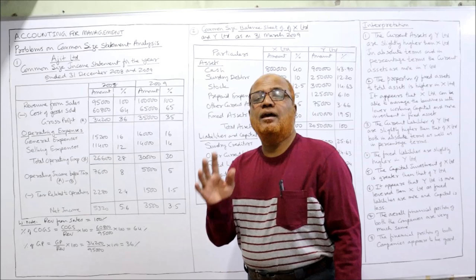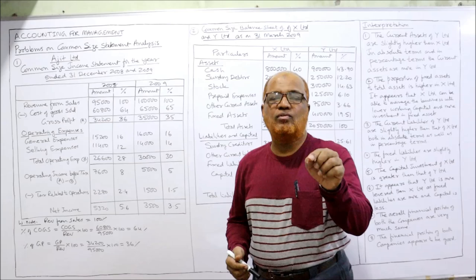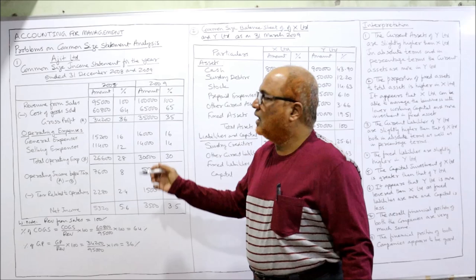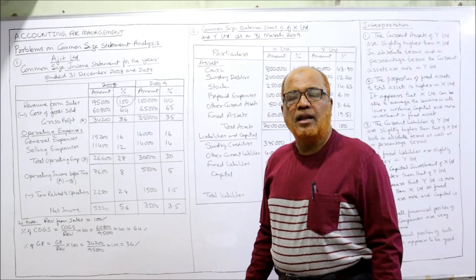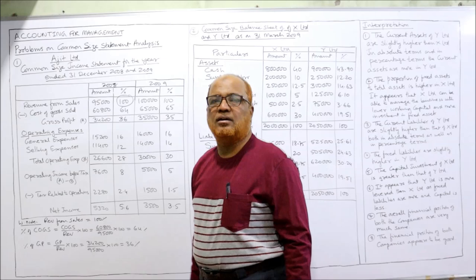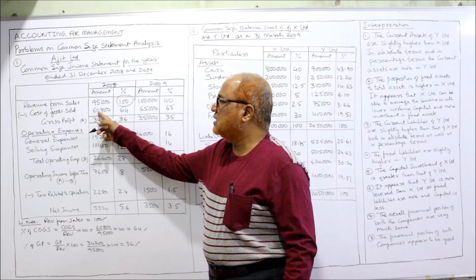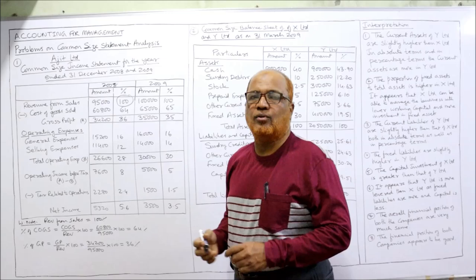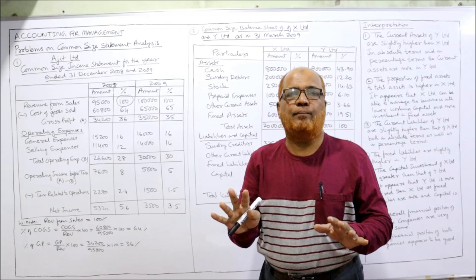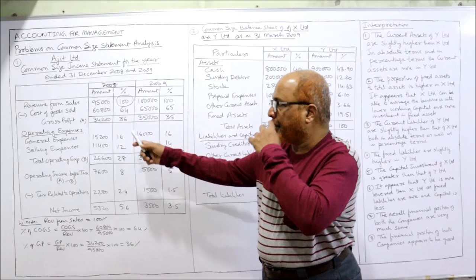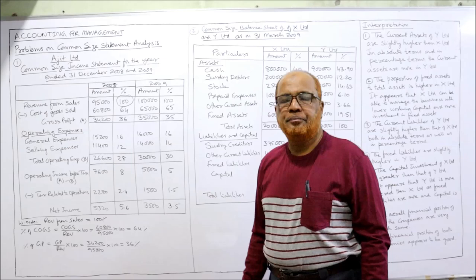Now we calculate the percentages. Remember, in the income statement the base is net sales, which is taken as 100 percent. Revenue from sales is taken as 100 percent. Express all other items as a percentage of sales. For example, cost of goods sold: 60,800 divided by 95,000 into 100 equals 64 percent. While watching, keep a notebook, calculator, and pen ready — calculate and check immediately.